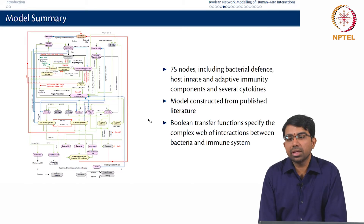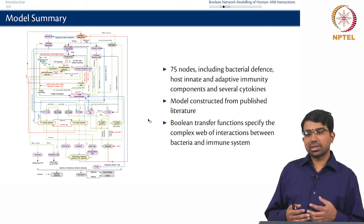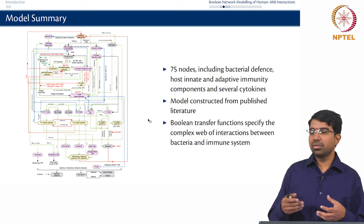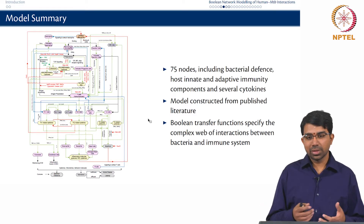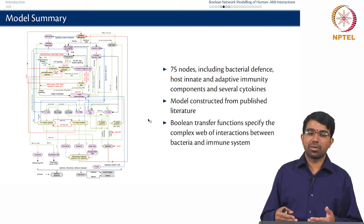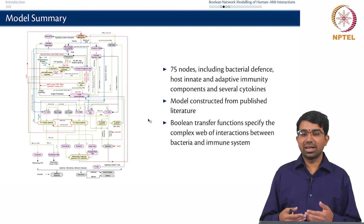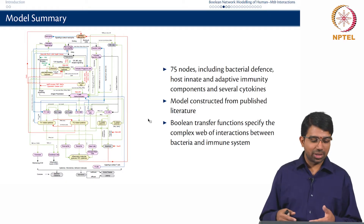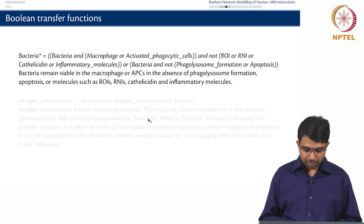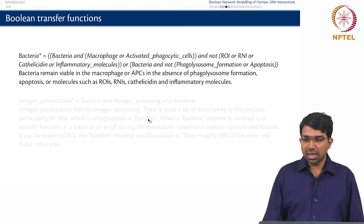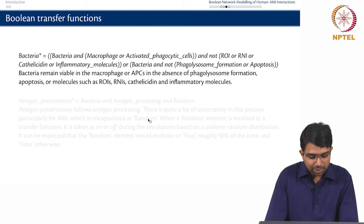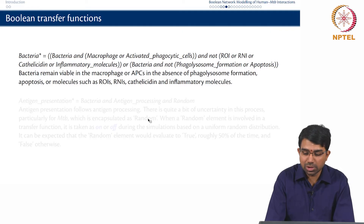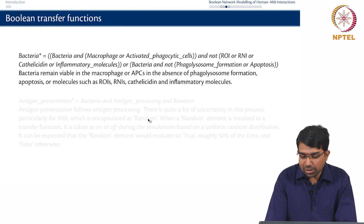You now have to frame the transfer functions: when is bacteria active, when does phagocytosis kick in, when does antigen presentation work, and so on. There is an element of chance in some of these, which we handle using a random variable. Here is a sample transfer function: the bacteria update rule states that bacteria reside only in macrophages or activated phagocytic cells, but should not be exposed to ROI, RNI, cathelicidin, or other inflammatory molecules, and phagolysosome formation or apoptosis should not have set in.